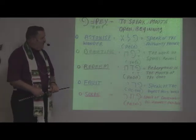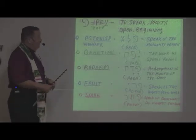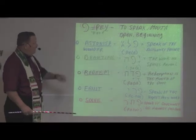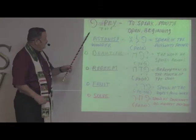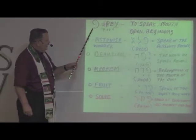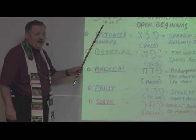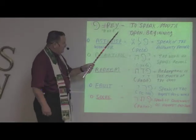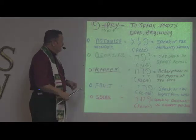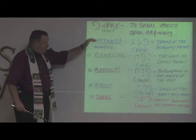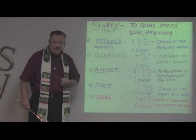Shabbat Shalom. Welcome everyone as we continue in our study with the Book of Acts Now Global Church and School. We're looking at the Hebrew alphabet here on the screen, and today we're looking at the letter Peh, one of the 22 letters. It kind of looks like a backward G. The sound of it can be either a P or an F, and it means to speak, or the mouth, to open, or beginning. We're going to look at some biblical terms applying the letter Peh to get an idea of how it's used in the Word of God.